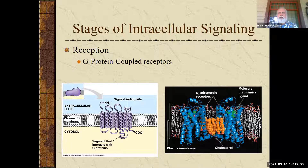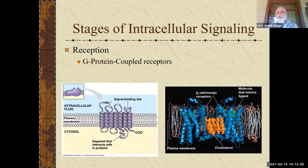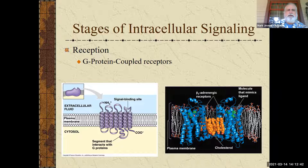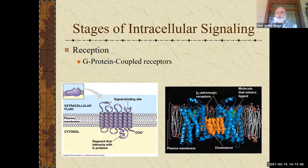This next video is going to talk about the reception process. We're going to give you four different types, and the first one we're going to start with is the G protein coupled receptors.